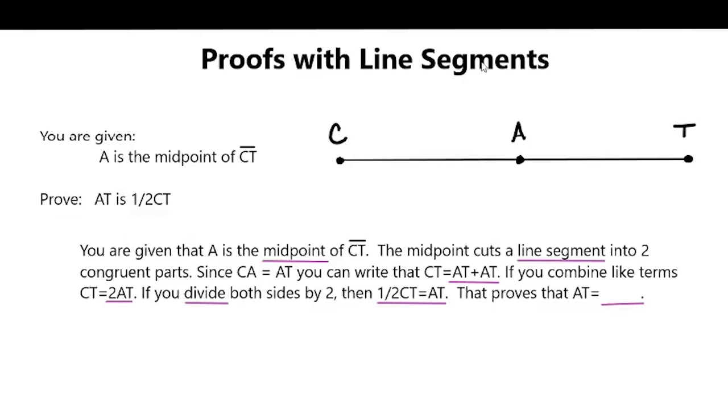And that proves that AT is equal to what? One half of CT. And so we prove that AT is equal to one half of CT, and that's how you do proofs with line segments. Thank you.